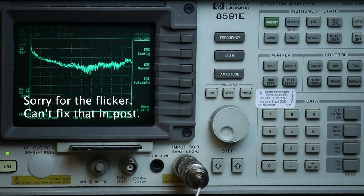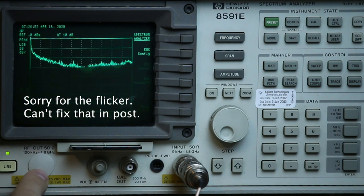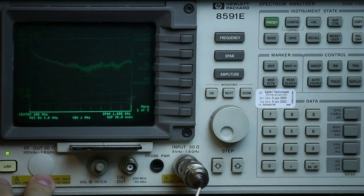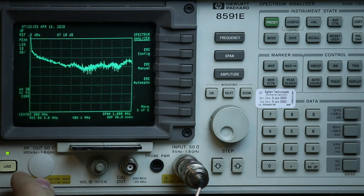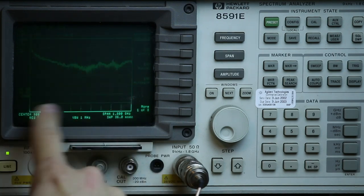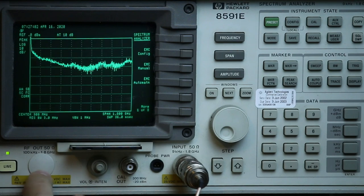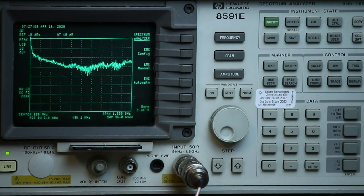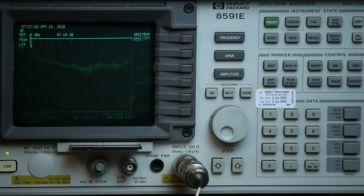Alright, to make my measurement for return loss, normally you would use what's called the tracking generator. Now I don't have that option installed, but what that would do is inject, it would sweep across a frequency band constantly, right? And inject that signal into my device under test and I measure what's returned here at the input port.